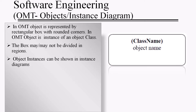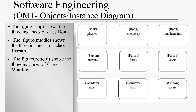In OMT, an object is represented by a rectangular box with rounded corners. An object is the instance of a class. The box may or may not be divided into regions. Object instances are shown as instance diagrams. For example, Physics, Chemistry, and Mathematics are objects of class Book, with the class name written in parentheses in bold. Similarly, three instances of class Person and three instances of class Window can be shown.